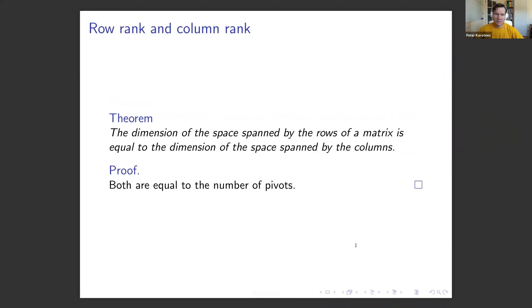Another one-liner: row rank equals column rank. The dimension of the space spanned by the rows of a matrix equals the dimension of the space spanned by the columns. Both are equal to the number of pivots, and it doesn't matter how you count them.